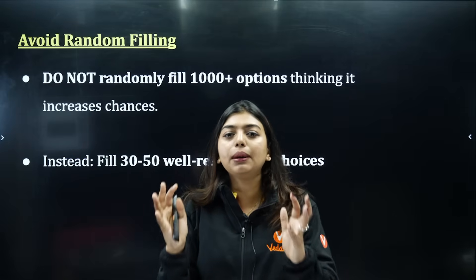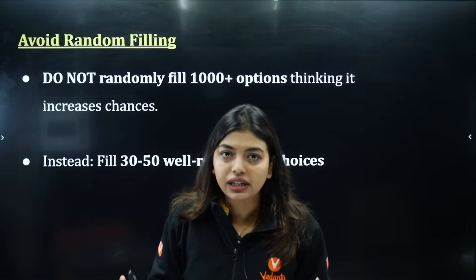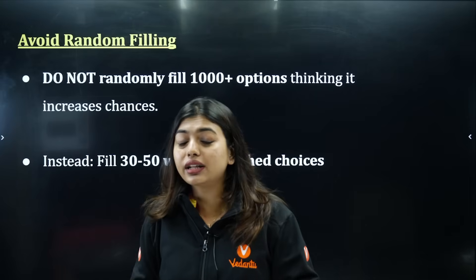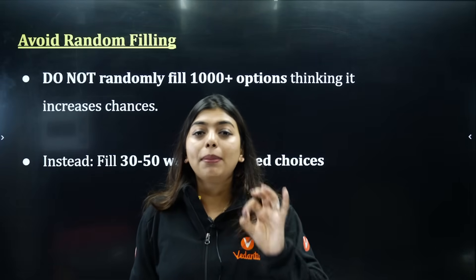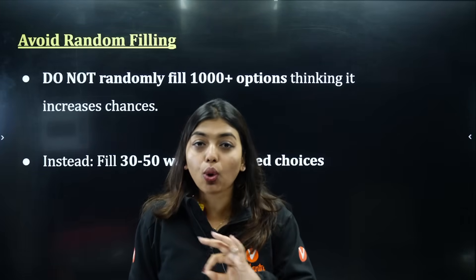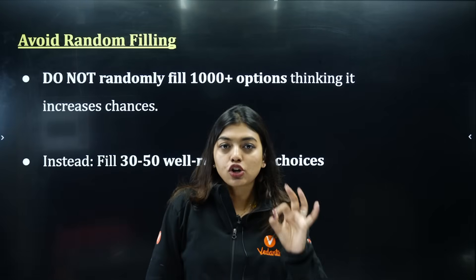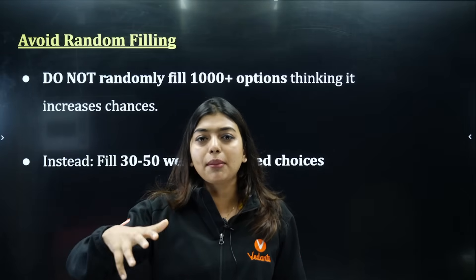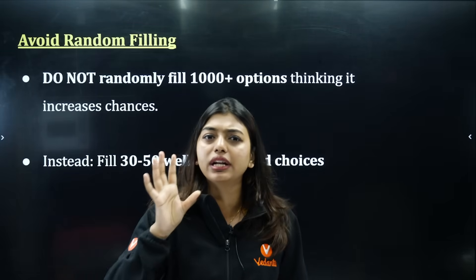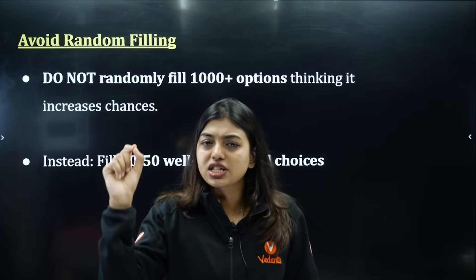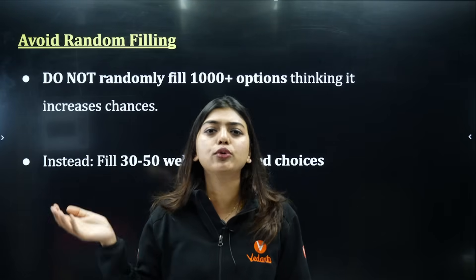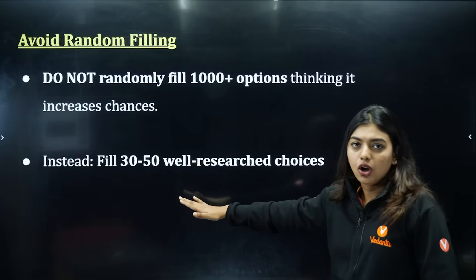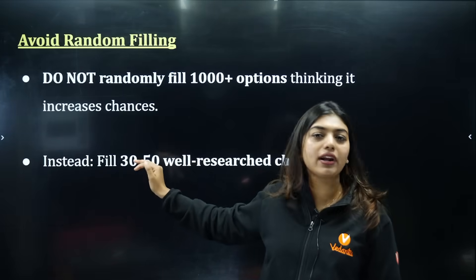Avoid random filling. Do not randomly fill 1,000+ options thinking increasing the number will give you a higher chance — no. Select the best 40 to 50 options. Maybe 20 for engineering, 20 for agriculture — it doesn't matter, but it has to be the best 50 only. Get to know about each college: check the campus, placements, highest package. Go up to 60 choices but stop there.